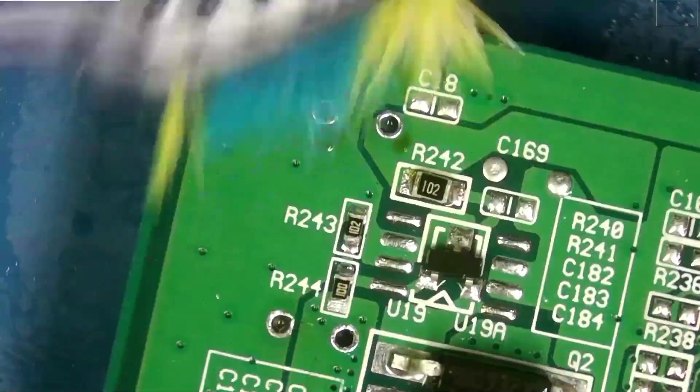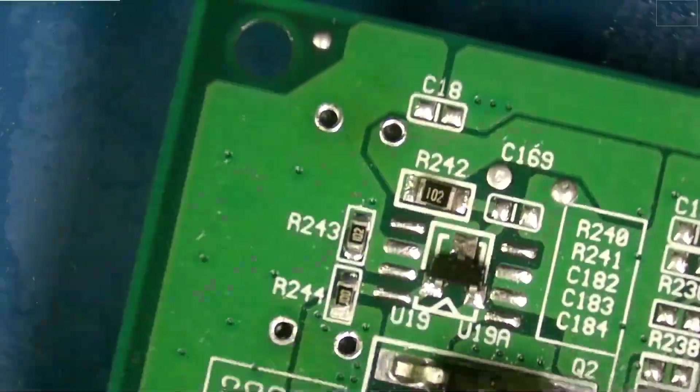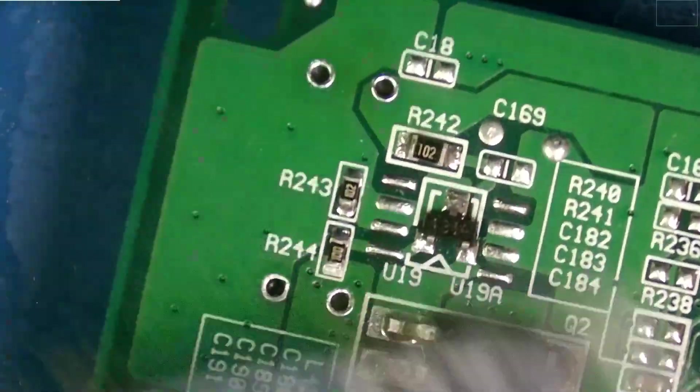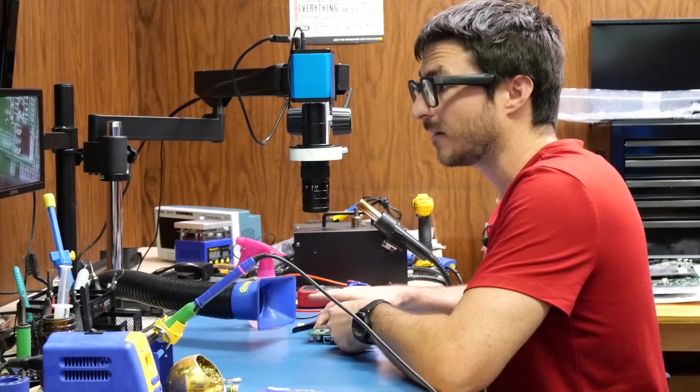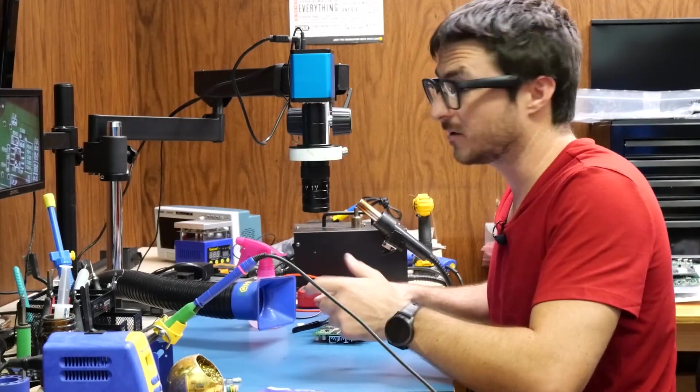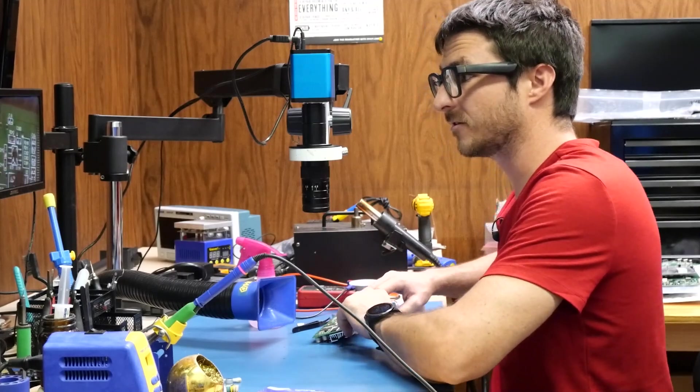So this is actually no-clean flux, but even though it is, I do like to remove all the flux. I have heard on occasion that some of these more sensitive circuit boards can still be affected by the flux, especially over time—it might corrode. So just want to make sure everything's nice and clean after we do our repair.